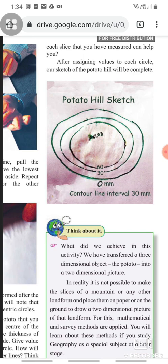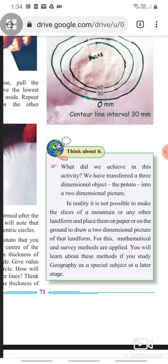Now see this potato hill sketch. The outermost circle is valued 0 mm and the inners are like this. Think about, like what we did, what did we achieve in this activity?